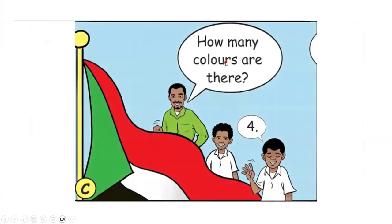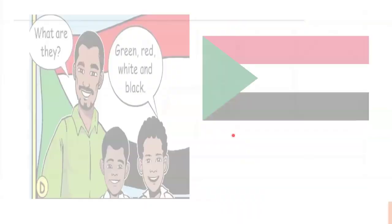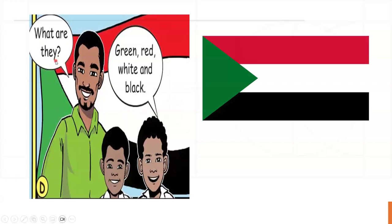How many colors are there? There are four colors. There are four colors — let us count them. What are they? Green, red, white, and black. These are our Sudanese flag colors.